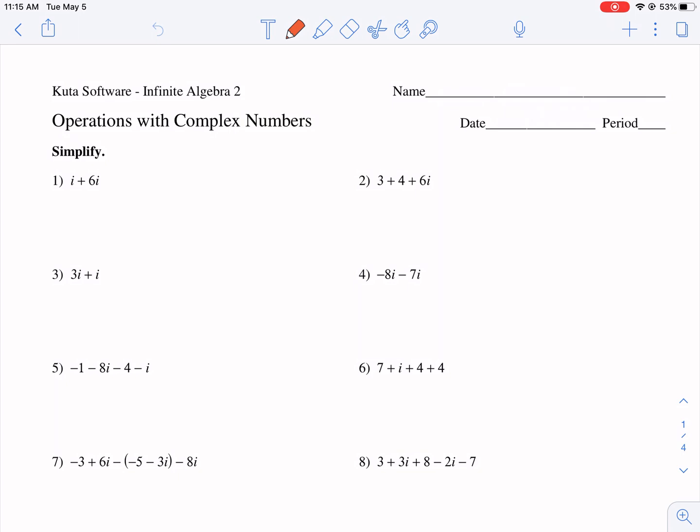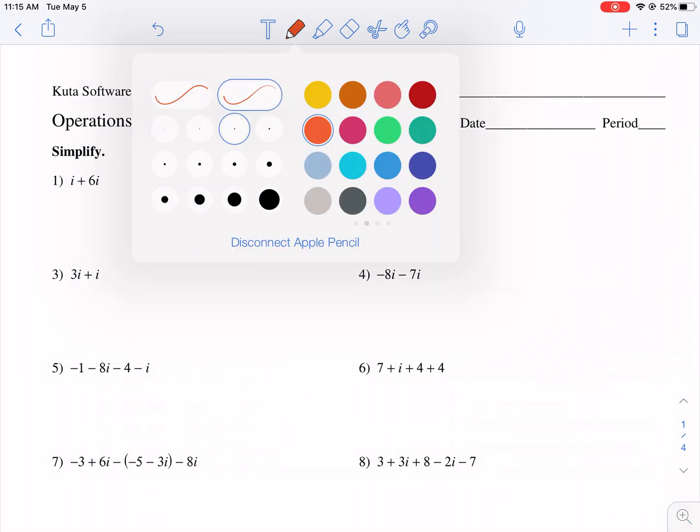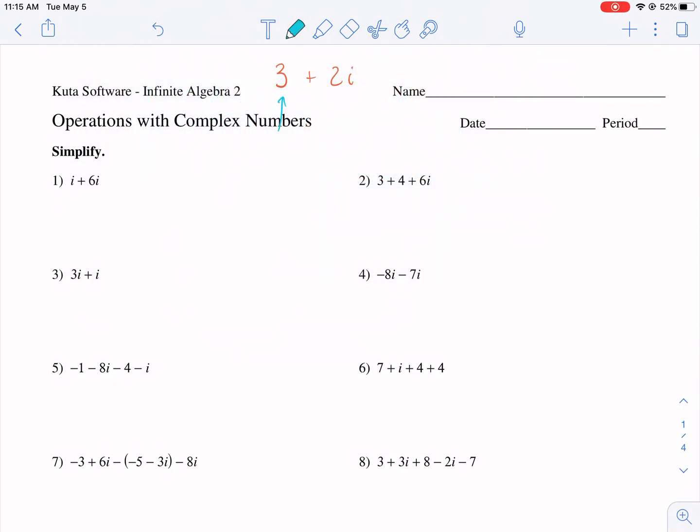One of the things you need to understand about complex numbers is complex numbers are composed of a real number and some sort of imaginary number. So here we have the real part, as they like to call it, very creative name, real part, and then the imaginary part. The imaginary part is just the two.